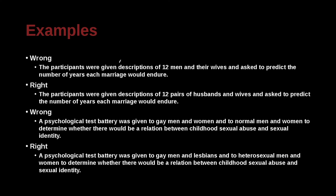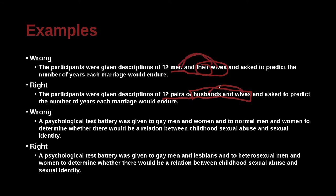The participants were given descriptions of 12 men and their wives and asked to predict the number of years each marriage would endure. The correct sentence is: the participants were given descriptions of 12 pairs of husbands and wives. Because saying 'men and their wives' implies these are different categories, when actually we mean husbands and wives — so we either say 'men and women' or 'husbands and wives.'